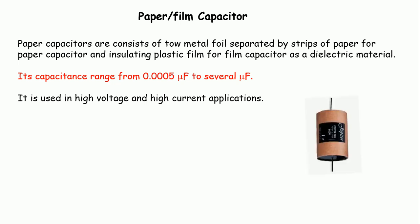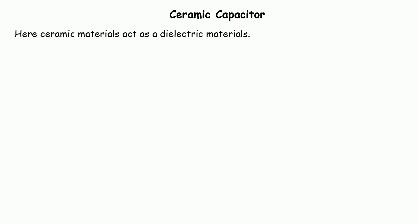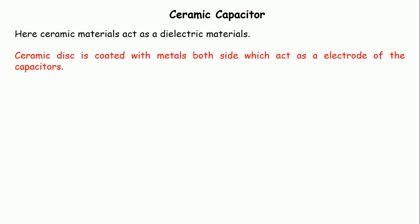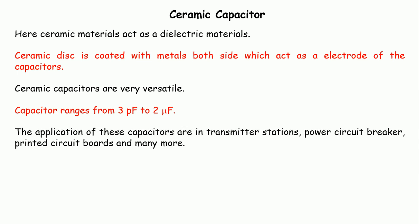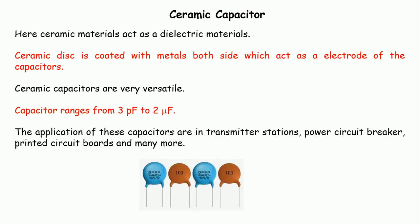Paper or film capacitors are used in high voltage and high current applications. This is what a film capacitor looks like as shown in the picture. Next is the ceramic capacitor. Like mica, paper, or film capacitors, ceramic material acts as the dielectric. Ceramic discs are coated with metal on both sides, which act as the electrodes. Ceramic capacitors are very versatile; their value ranges from 3 picofarads to 2 microfarads. Applications include transmitter stations, power circuit breakers, printed circuit boards, and many more. This is the ceramic capacitor that almost everyone has seen in their labs.